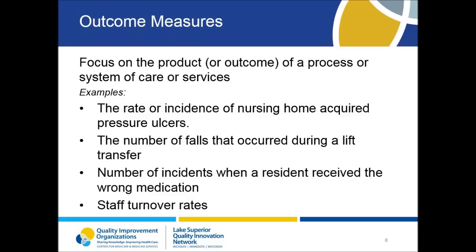Outcome measures provide information on whether the implemented action plan achieved the intended goal. For example: is the individual safer? Has better care been provided? Have further problems been avoided? Sources of outcome measures can be data monitored as part of an organization's quality or safety program, including incident reports, chart reviews, satisfaction surveys, MDS data, or QM/QI reports. Process measure data collected and monitored over time identifies if the change has been sustained. Used alone, a process measure will not describe the impact the action plan had on preventing another incident. Using both process and outcome measures allows an organization to analyze whether the change has occurred and whether it has changed the system. Using only one type of measure gives only part of the story.